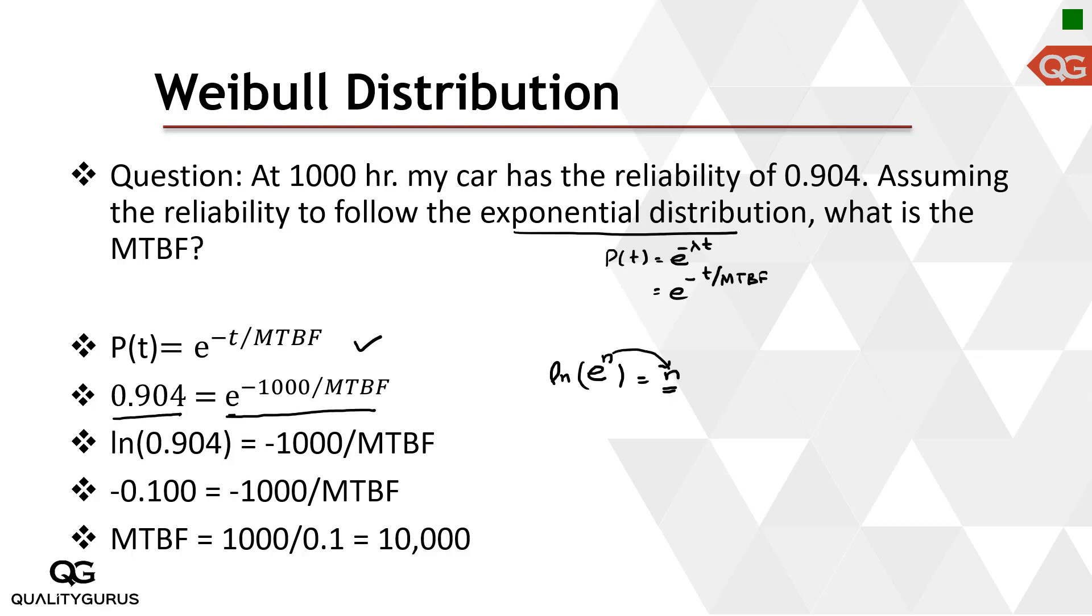This is how we will be doing this using this calculator. To solve this equation, I take the natural log of both sides. So natural log of 0.904 and ln of e to the power something will become that something, which is minus 1000 divided by mean time between failure.